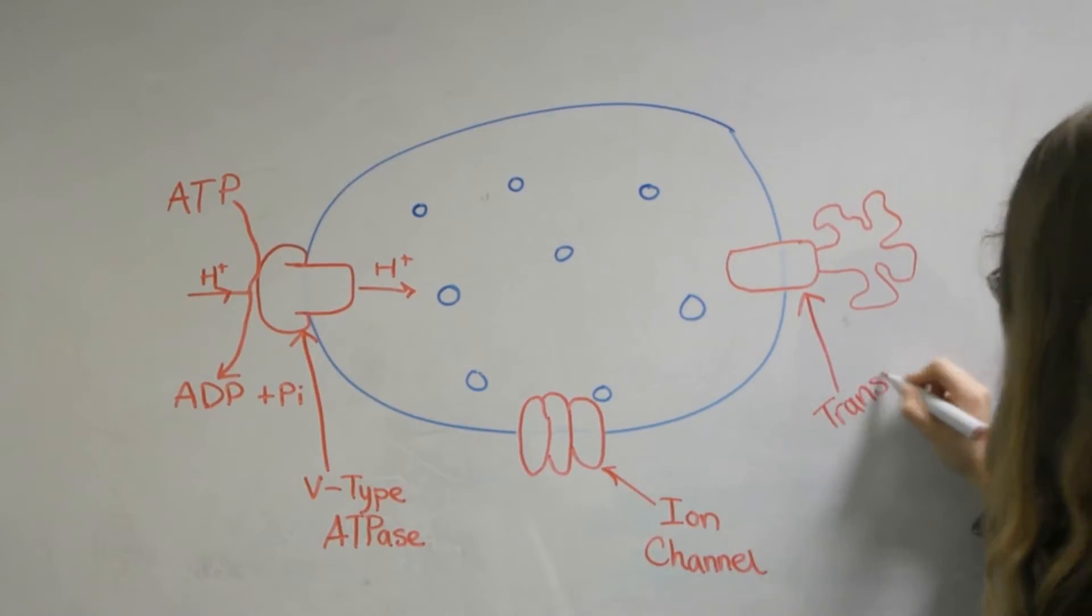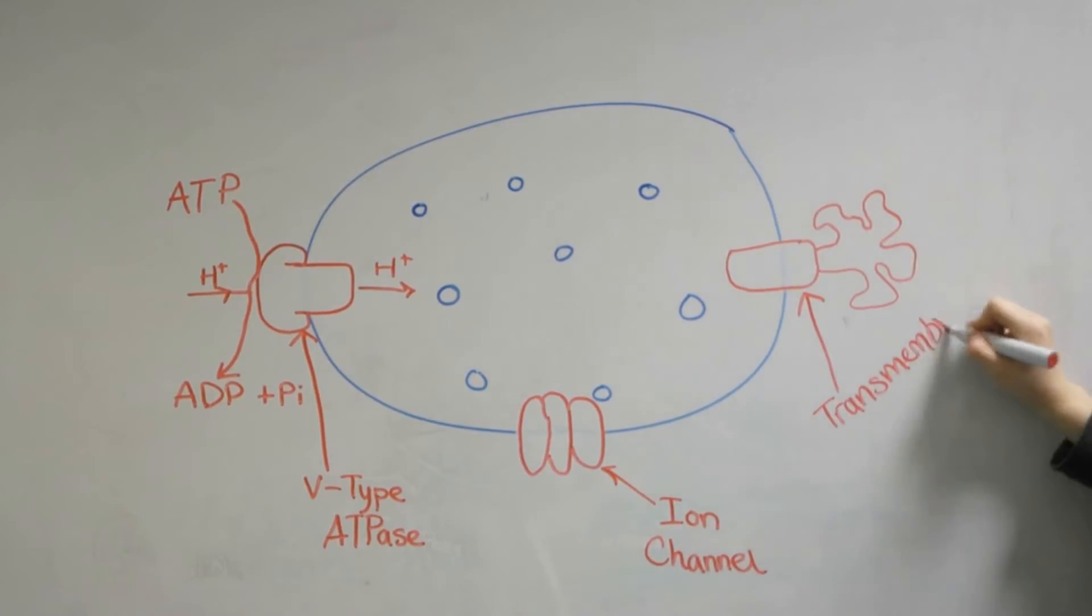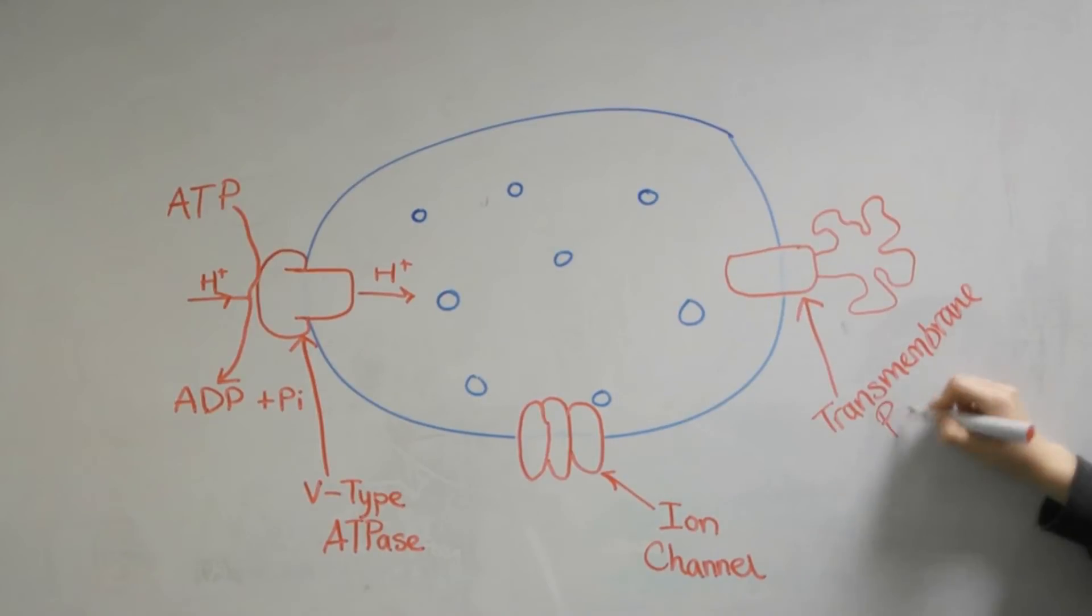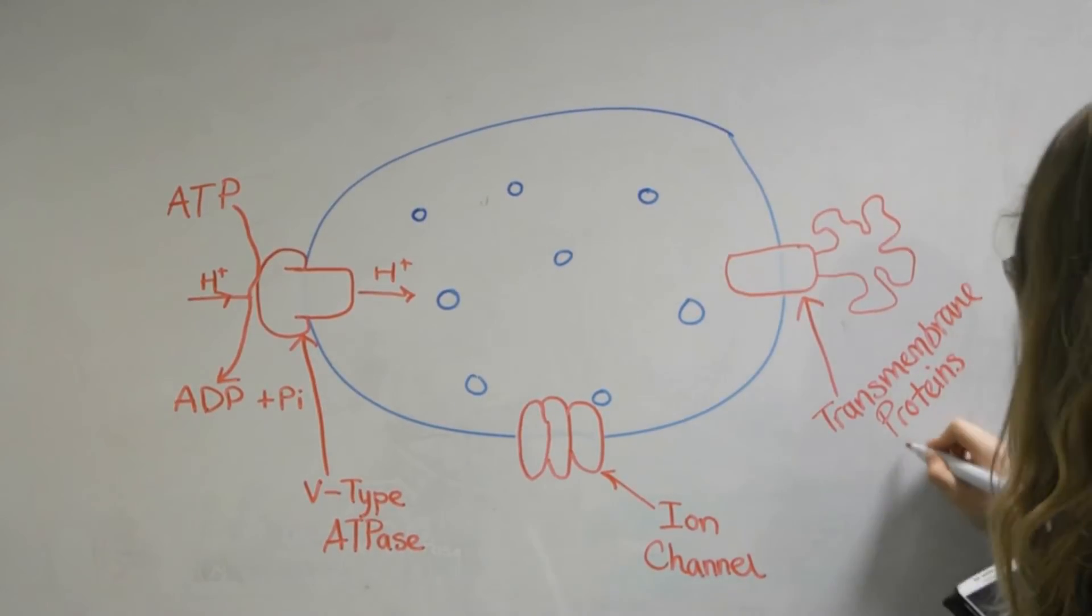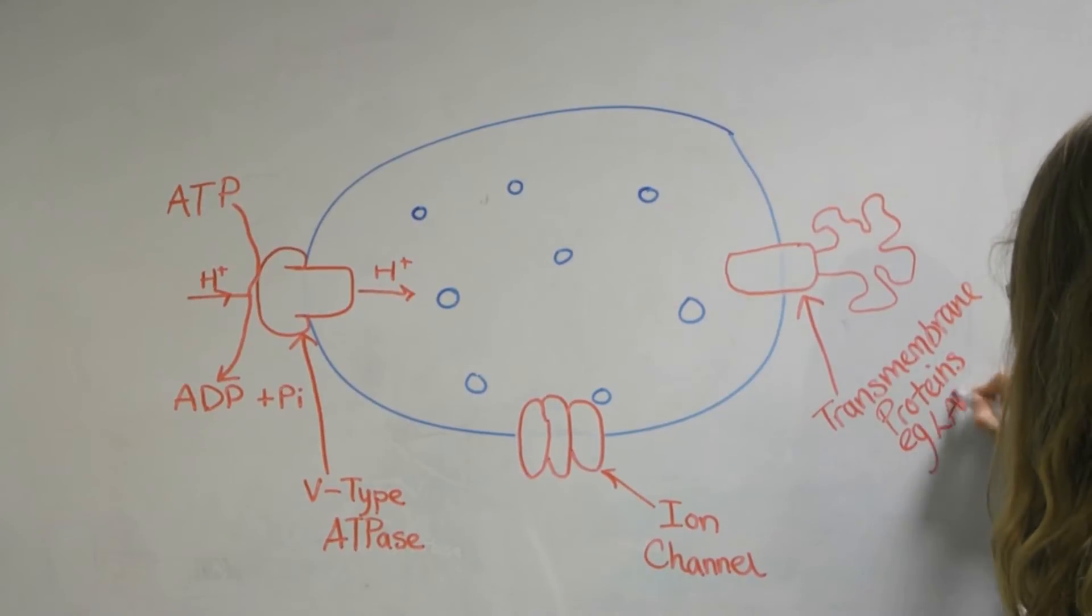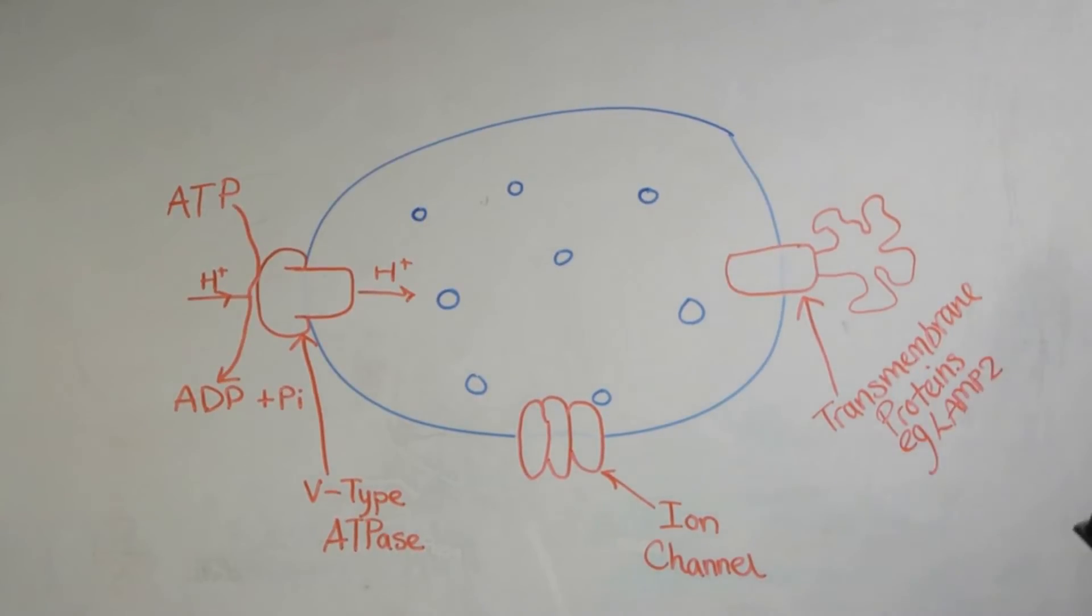The two most common, lamp 1 and lamp 2, account for 50% of the total content of proteins. Those included on the diagram are a very tiny fraction of the actual amount of proteins present. In fact there are usually over 100 in each membrane.